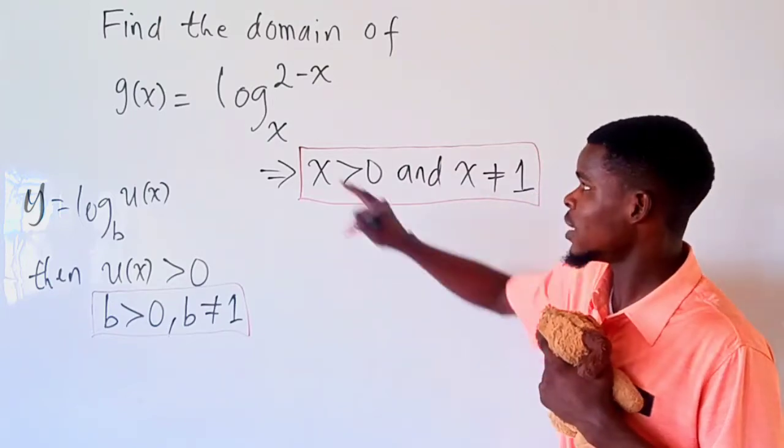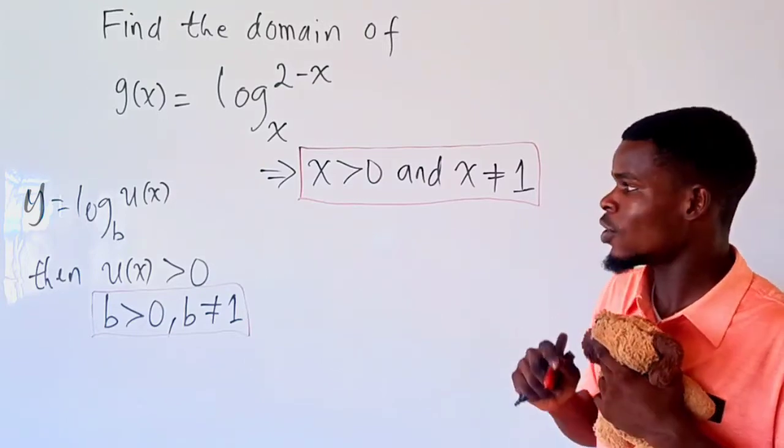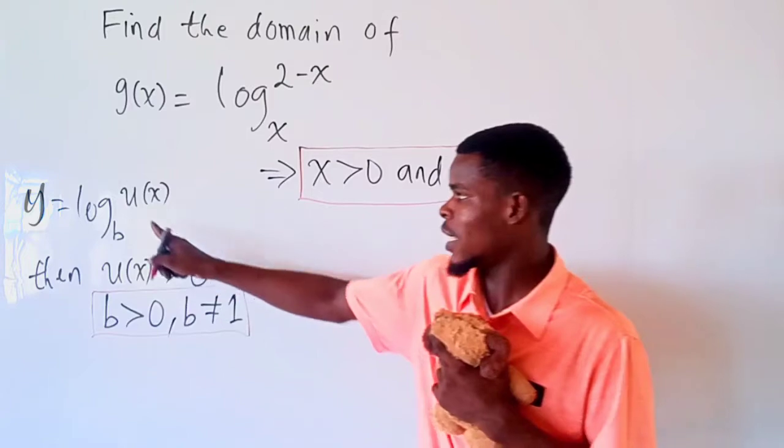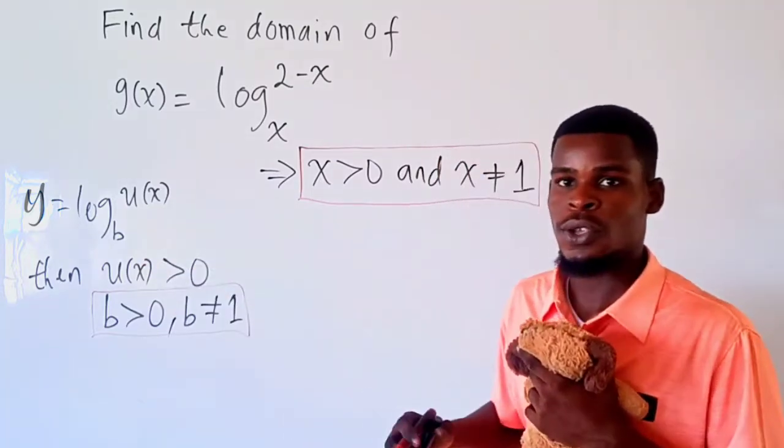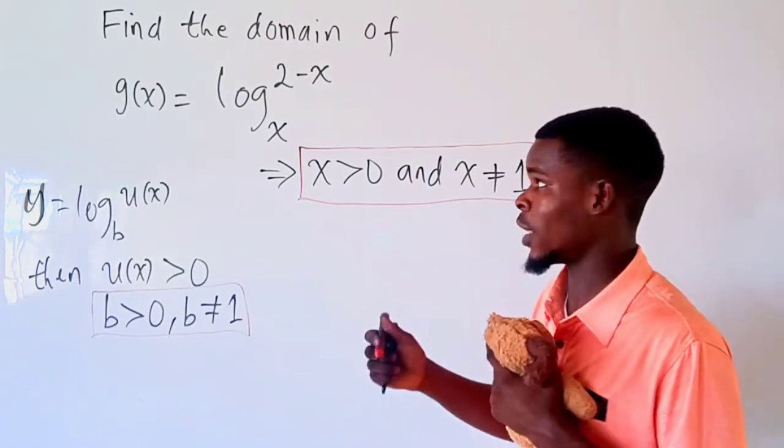So using this right here gives us a nice domain for that function, but we are not done yet. Let's look at the entry. The entry here is 2 minus x. Taking note of the fact that the logarithm function is only defined if the entry is greater than zero, so you want to find the value of x such that 2 minus x must be greater than zero all the time.